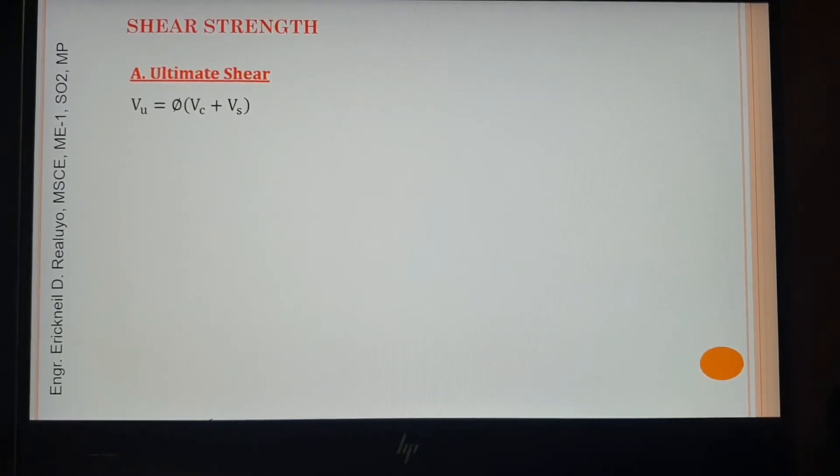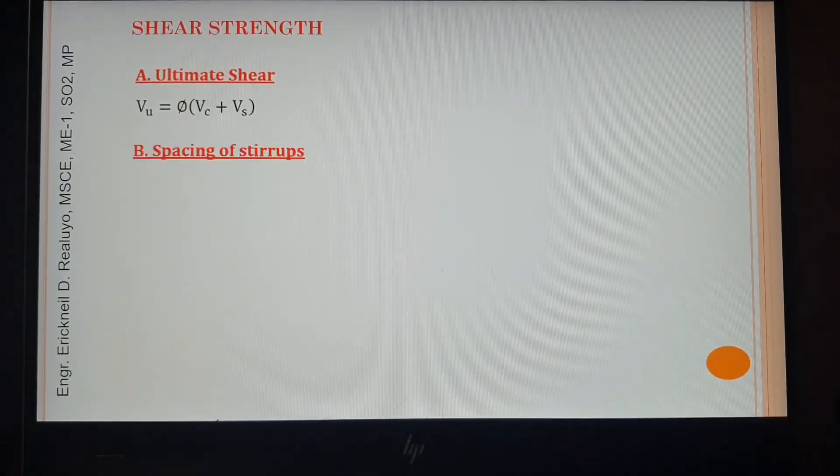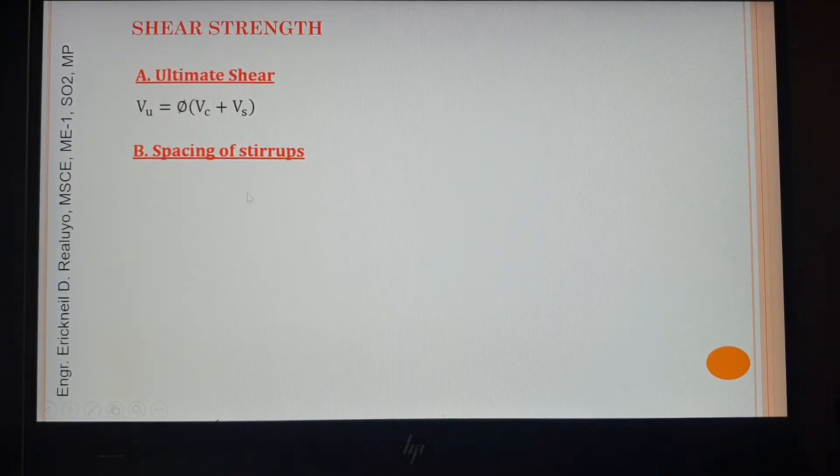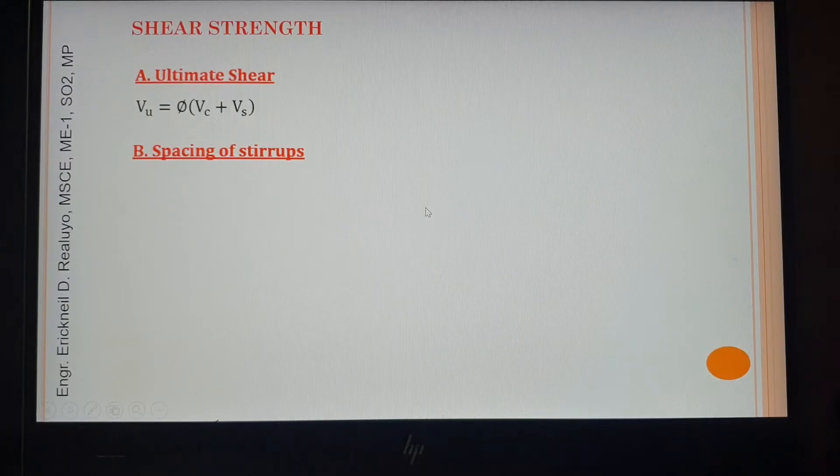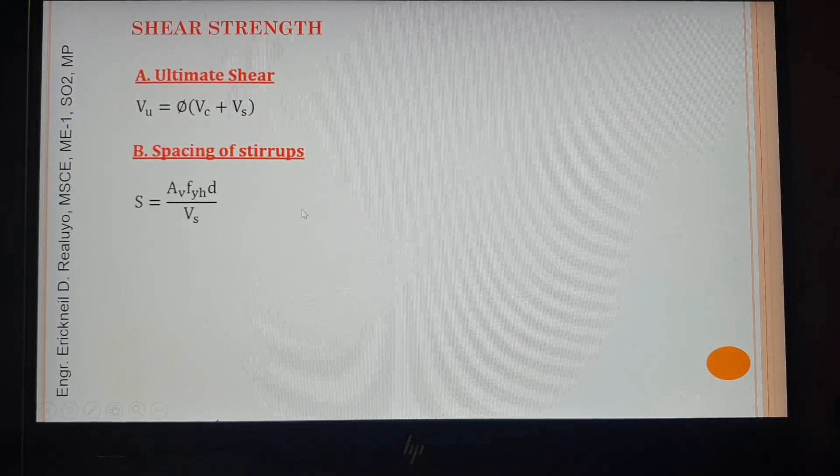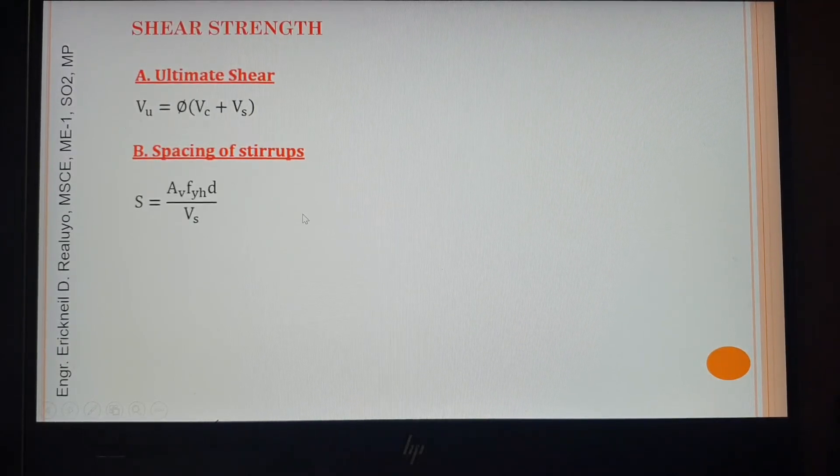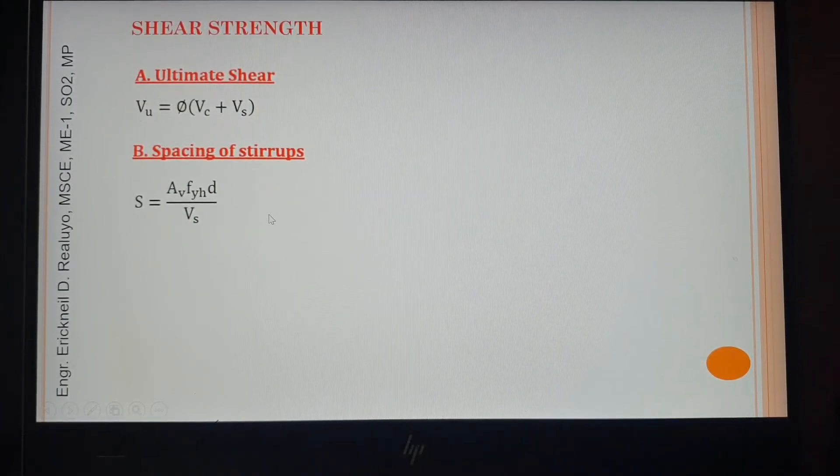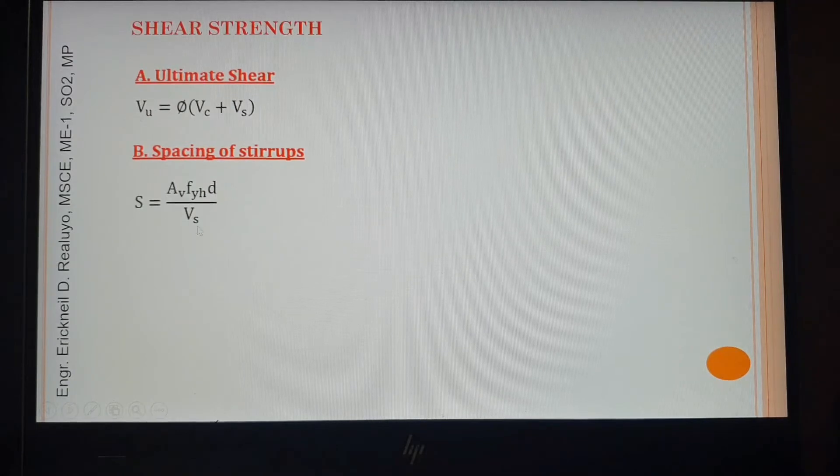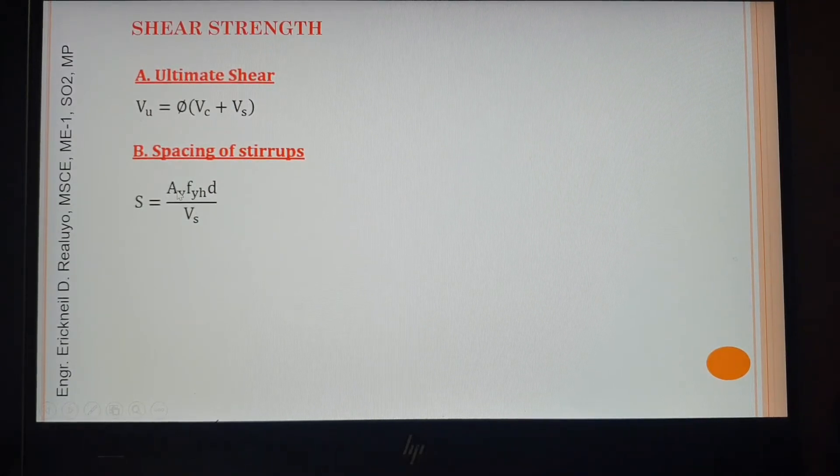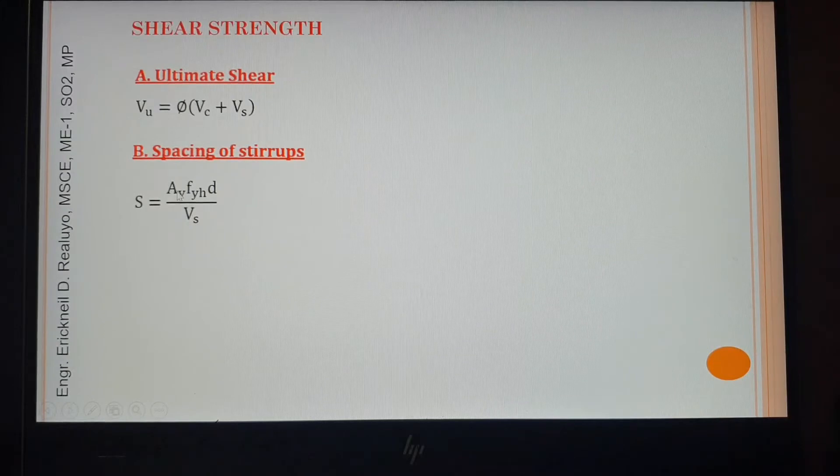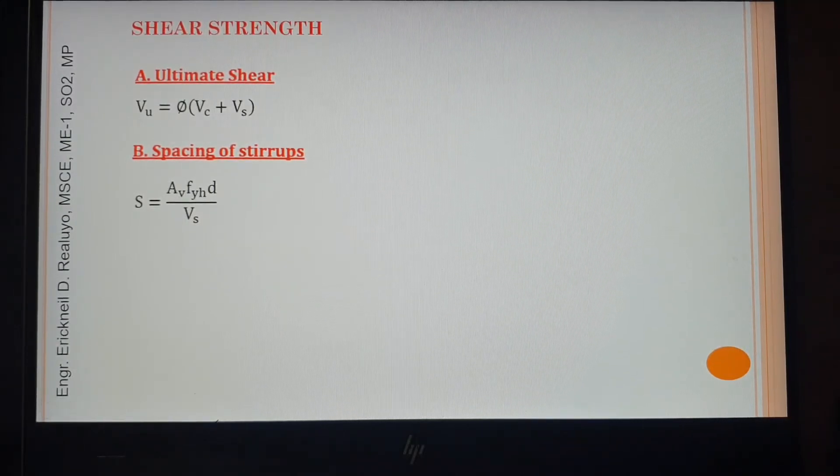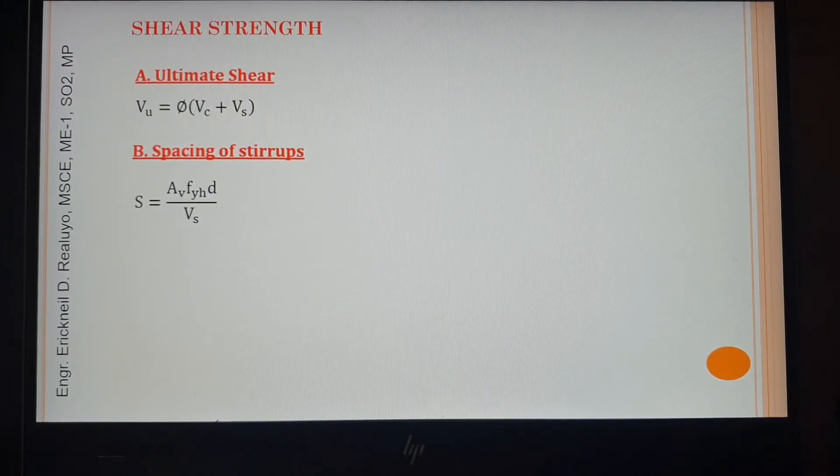Now in the letter B, provision spacing of stirrups, this is the formula that we should be familiar with. After having the value of spacing from this expression, we need to compare it to that of S max. S max is the maximum spacing of shear reinforcements.